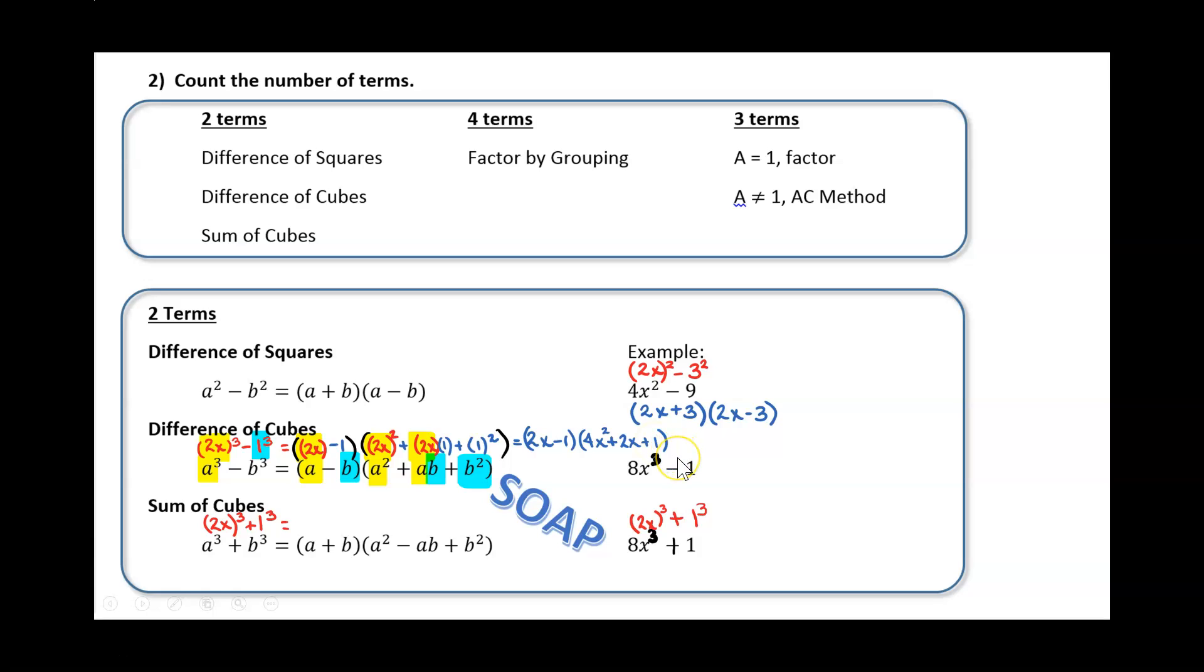Now if that original problem had been 8x cubed plus 1 instead, the only thing that's going to change if you compare the difference of cubes formula with the sum of cubes formula, you'll notice the only thing that changes are the signs. And an easy way to remember those signs is by using SOAP. SOAP stands for same, opposite, always positive. Same, opposite, always positive.